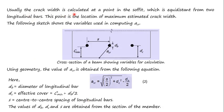Usually the crack width is calculated at a point in the soffit which is equidistant from two longitudinal bars, as this is the location of maximum estimated crack width. The following sketch shows the variables used in computing the shortest distance: minimum cover, a_cr, bar diameter d_b, and centre-to-centre spacing S of the two longitudinal bars.